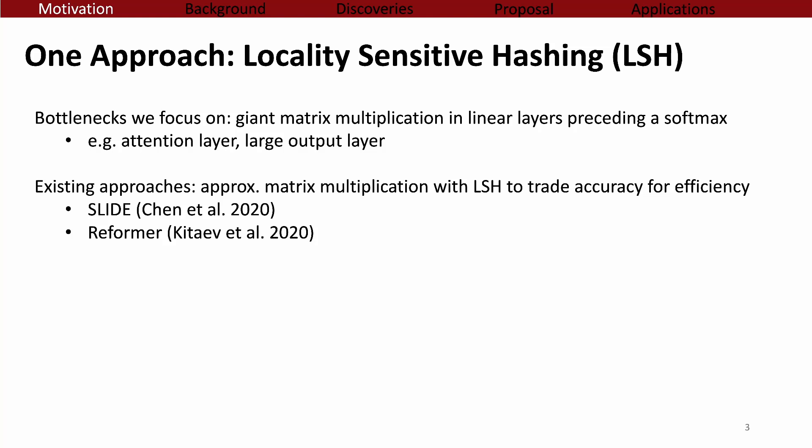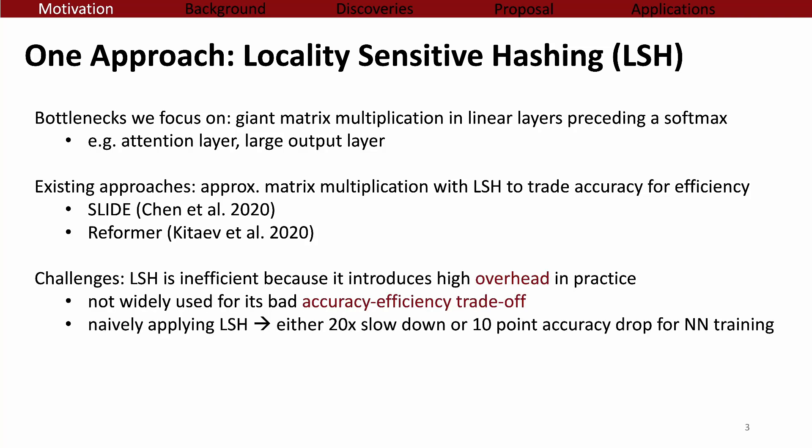We know that approximate matrix multiplication can trade off accuracy and efficiency. Several recent exciting works we've built upon, like SLIDE and Reformer, take advantage of this trade-off and show in some special cases how to use locality-sensitive hashing to do approximate matrix multiplication in MLP and transformer model training. However, it is not widely used because LSH itself will introduce new overhead, which can lead to bad accuracy-efficiency trade-offs. For example, naively applying LSH may cause 20 times slowdown or a 10-point accuracy drop compared to brute-force matrix multiplication in neural network training.